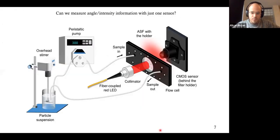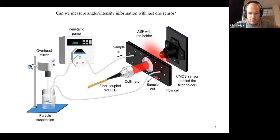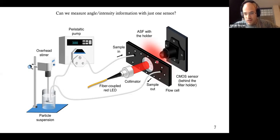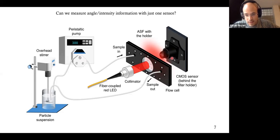Here's what they did. Most of the setup is very similar to the commercial one — we have particles flowing through the flow cell inside water. There is a collimated light beam that hits the particle and light scatters. Everything up to here is traditional light scattering. But then there is a filter, and the sensor is behind it — just one sensor. The novelty actually comes from the filter.